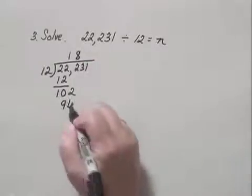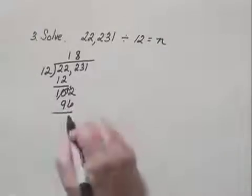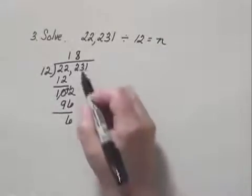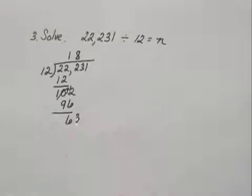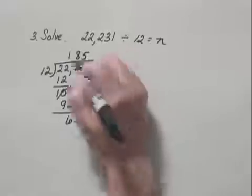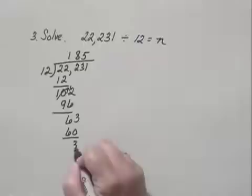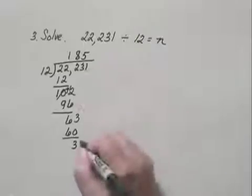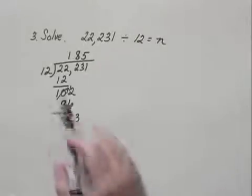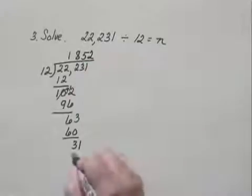We subtract that from 102, and we get 6. And we bring down the next digit, which is 3. 12 goes into 63 five times. 5 times 12 is 60. We subtract, and we have 3. And we bring down the last digit, which is 1. 12 goes into 31 two times. 2 times 12 is 24.